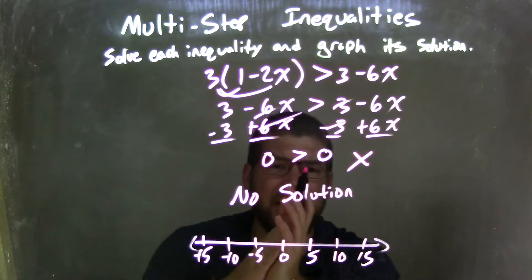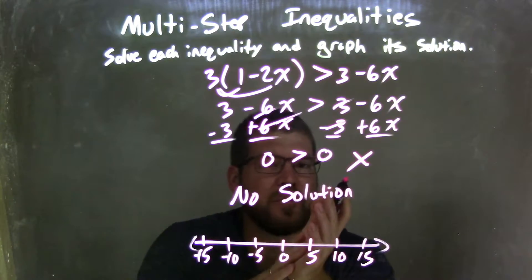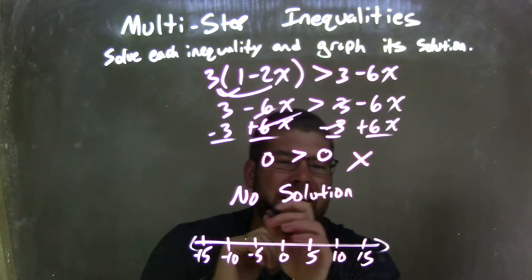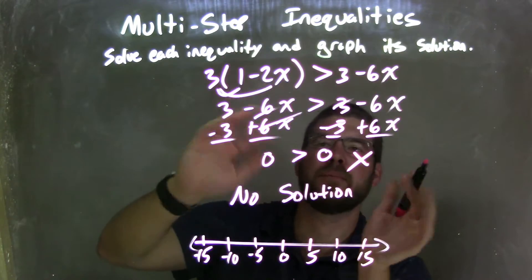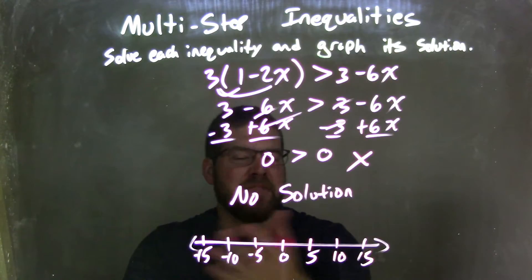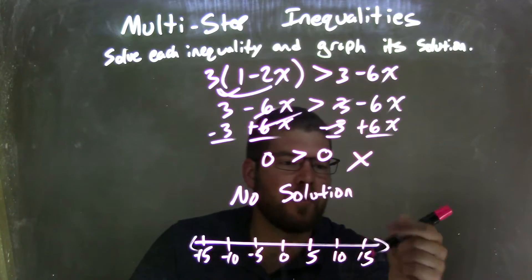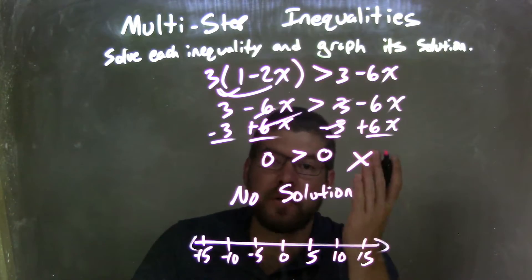So I have 0 is greater than 0, which is not a true statement. We would write no solution, meaning there's no value for x that we can plug in that makes this a true statement. So when I graph it, I have nothing to graph. There's no graph here. Because there's no solution, our graph matches our final answer of no solution.